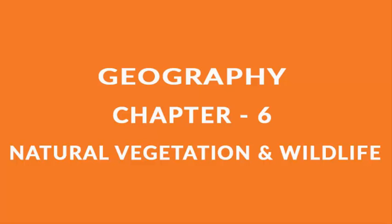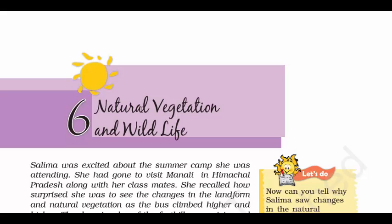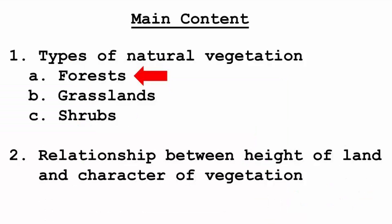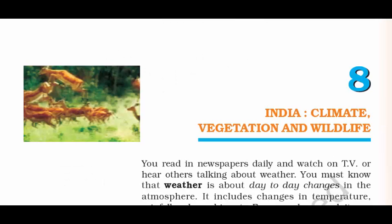Hello everyone. I'm back with another chapter of Geography, Class 7 NCERT — Chapter 6, Natural Vegetation and Wildlife. In this chapter, our main focus will be on two broad categories: the types of natural vegetation and the relationship between the height of the land and the character of vegetation. Before we start, I'd like to put a disclaimer: under natural vegetation we'll be talking about forests. If you haven't checked out my Class 6 Chapter 8 on wildlife and vegetation, I recommend you go back and check it out — the link is in the description. Let's start with forests.